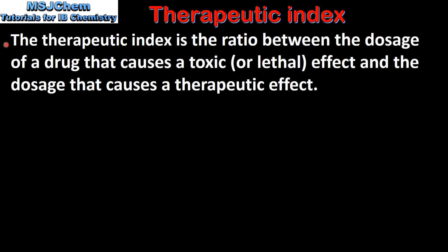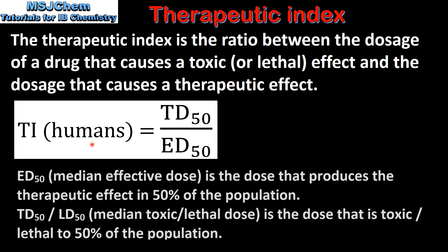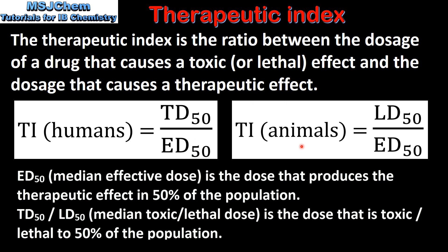The therapeutic index is the ratio between the dosage of a drug that causes a toxic or lethal effect and the dosage that causes a therapeutic effect. In humans, the therapeutic index is calculated by dividing the median toxic dose by the median effective dose. In animals, it is calculated by dividing the median lethal dose by the median effective dose.